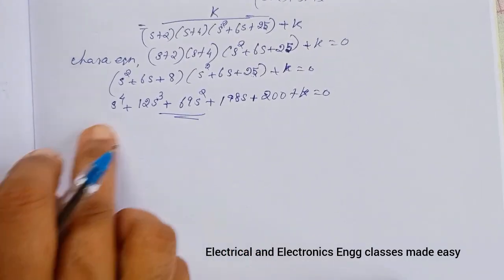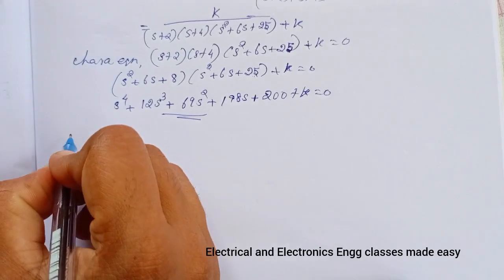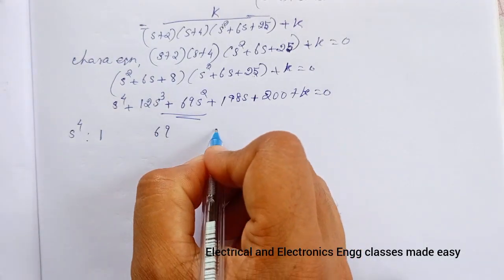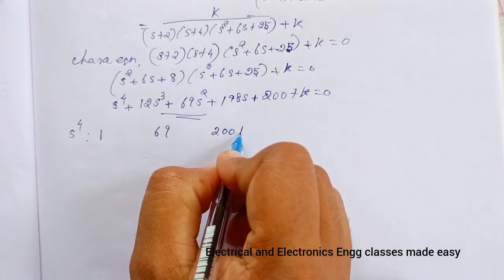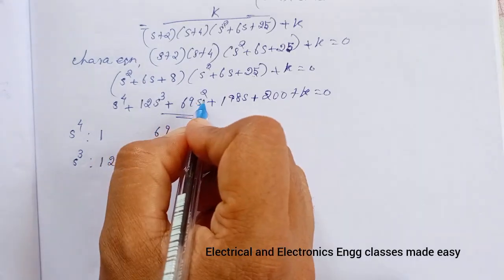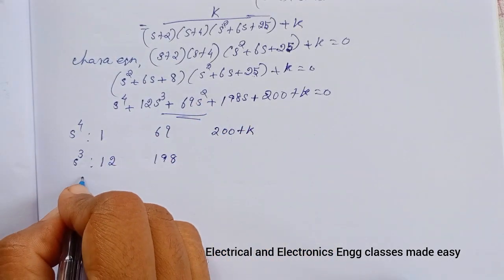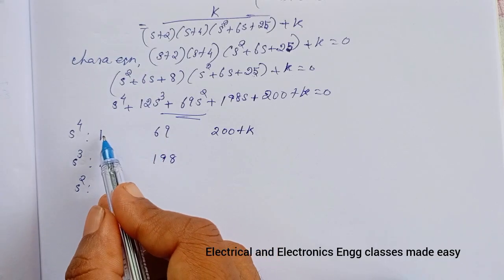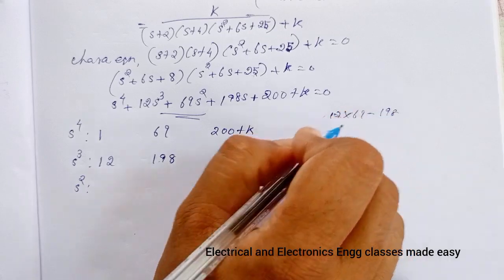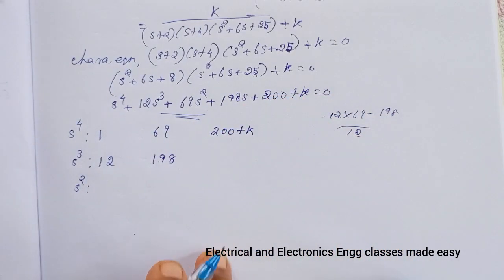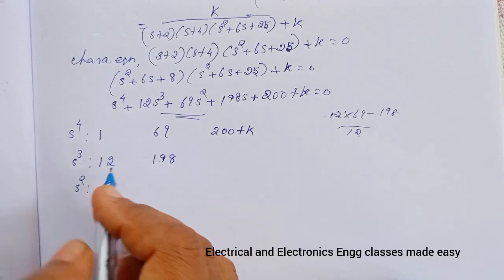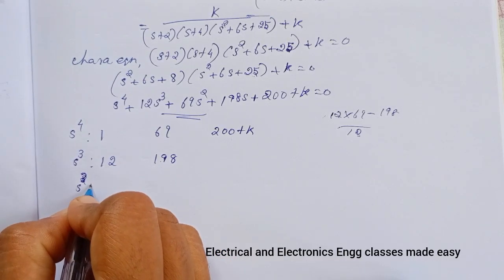The highest power of s is 4, so we construct the Routh array. Row s⁴: 1, 69, (200+K). Row s³: 12, 198, 0. For simplicity, divide the s³ row by 12 to get: 1, 16.5, 0. Row s²: (1×69 − 16.5×1)/1 = 52.5, and (1×(200+K) − 0)/1 = (200+K).